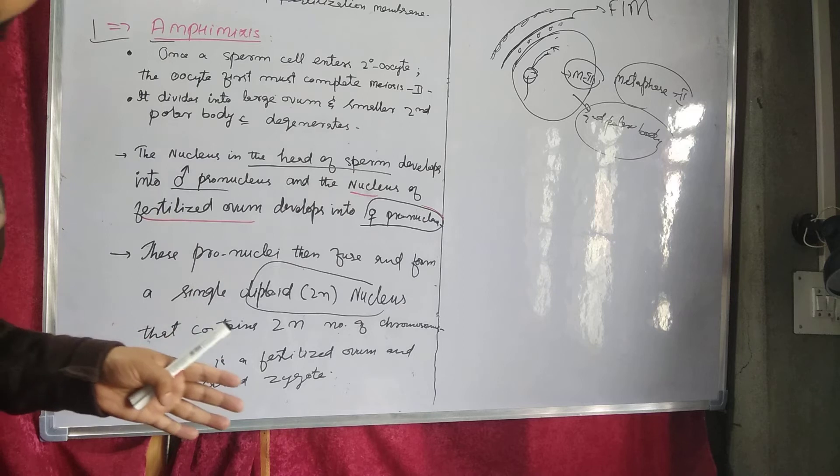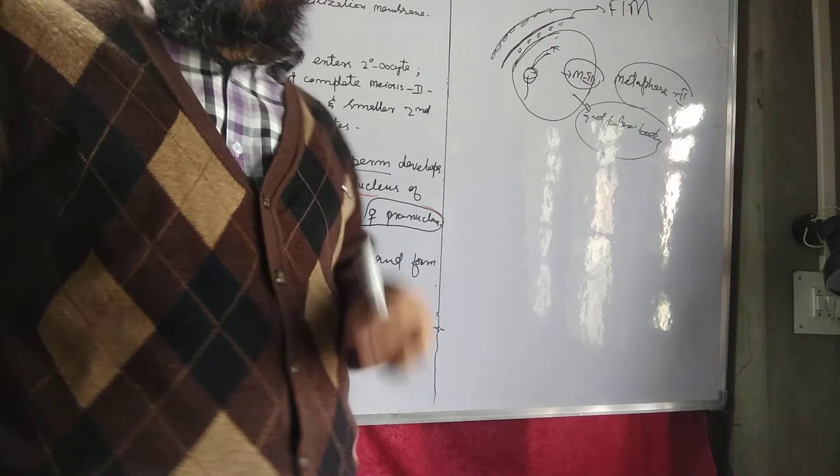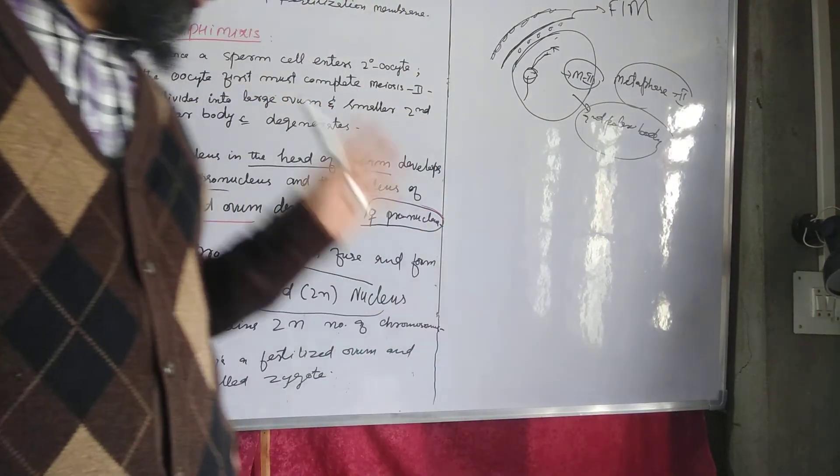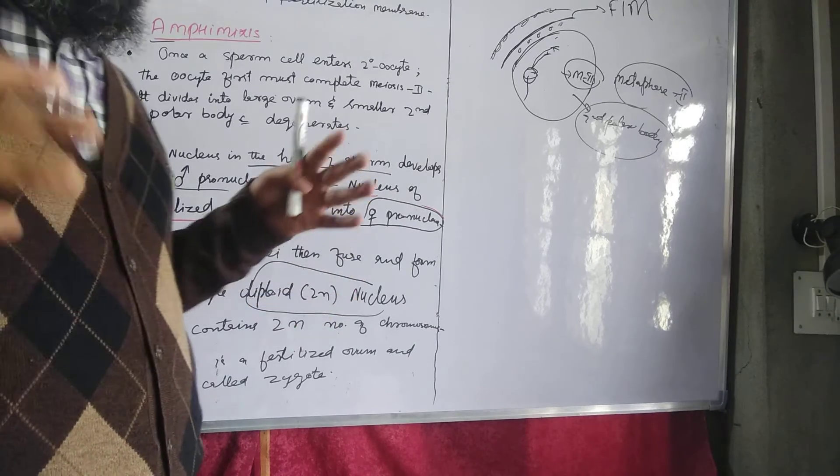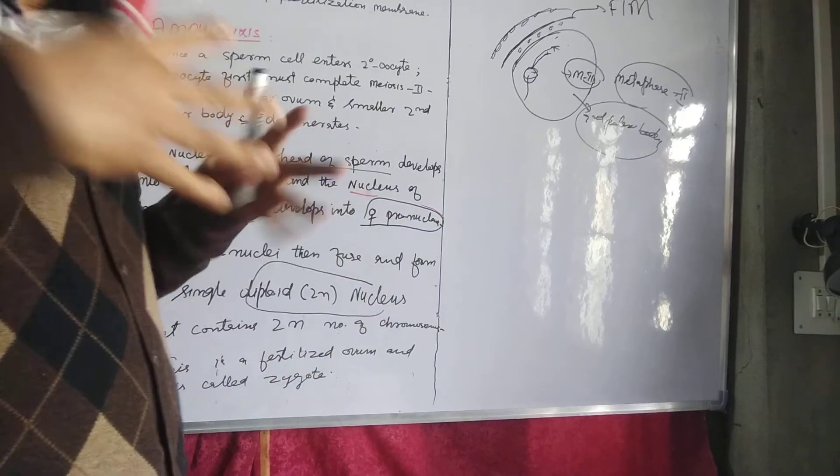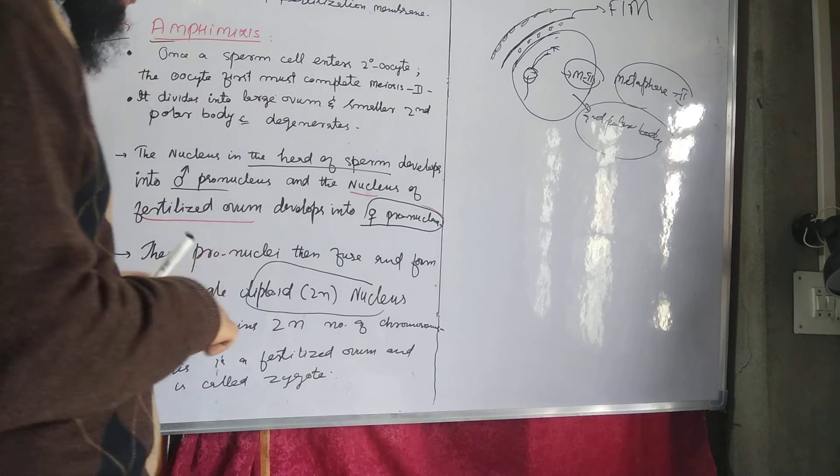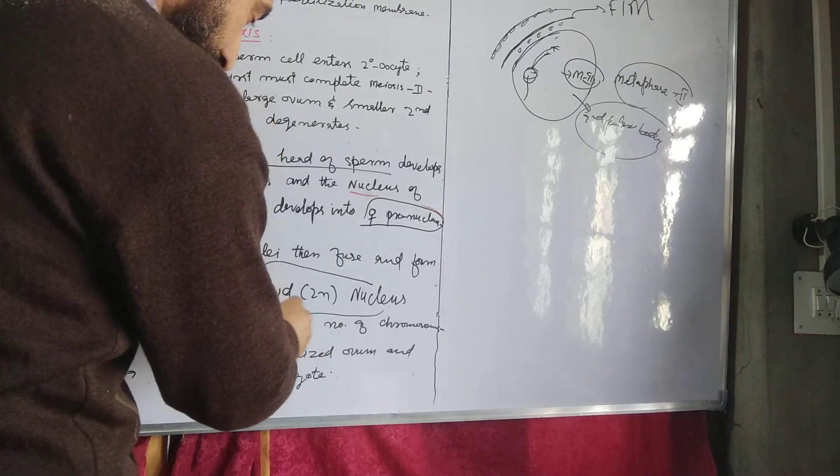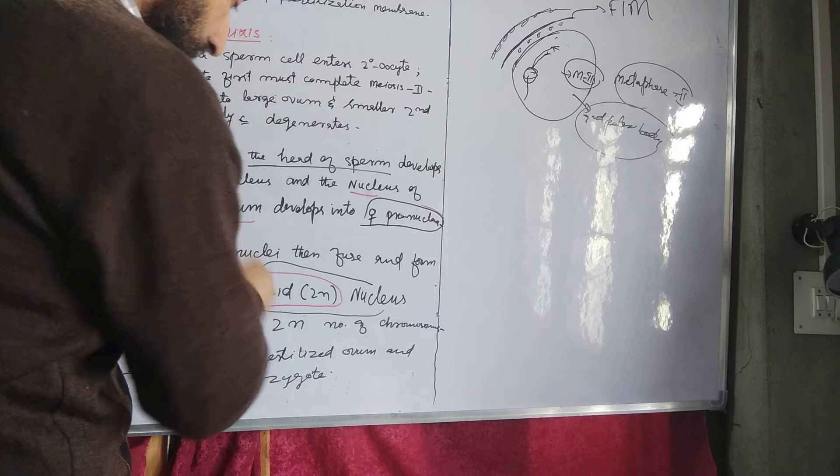Similarly, the fertilized ovum's nucleus forms the female pronucleus. Once these pronuclei are formed, male and female pronucleus from sperm and ovum, they fuse together.